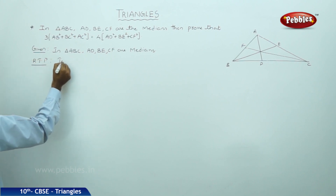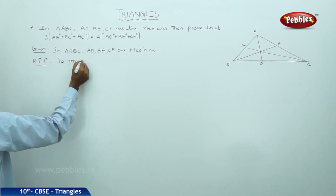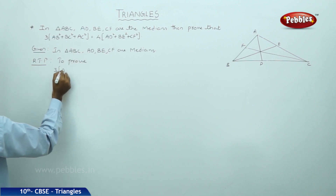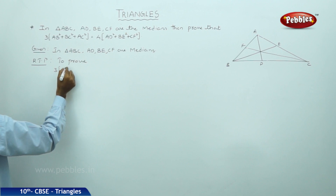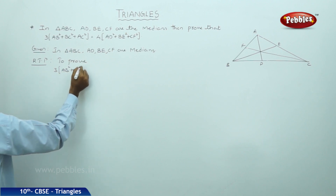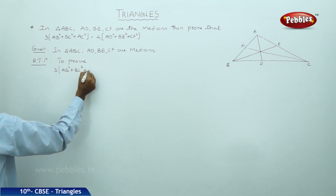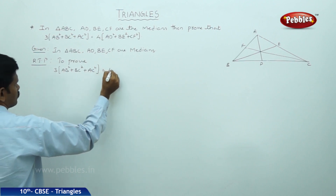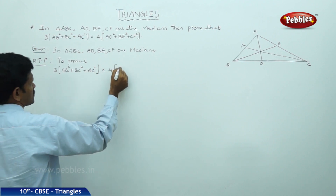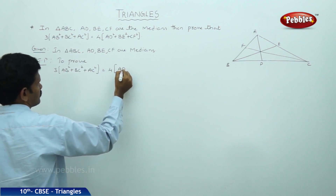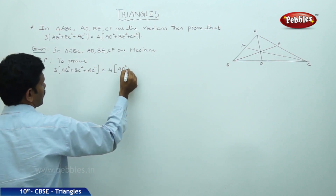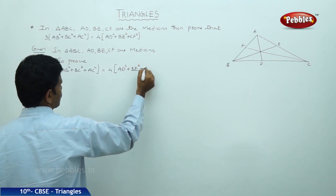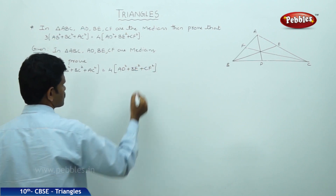We have to prove that 3 times (AB² + BC² + AC²) is equal to 4 times (AD² + BE² + CF²).